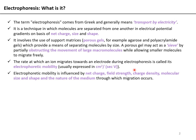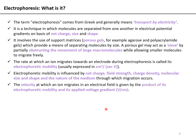Electrophoretic mobility is influenced by the net charge — how much charge a molecule has determines the rate of migration toward a particular electrode — as well as field strength, charge density, molecular size and shape, and the nature of the medium. For shape: a compact molecule faces lesser resistance, while a more elongated molecule faces more resistance and therefore migrates slowly. The velocity at which an ion migrates in an electrical field is given by the product of its electrophoretic mobility and the applied voltage gradient.